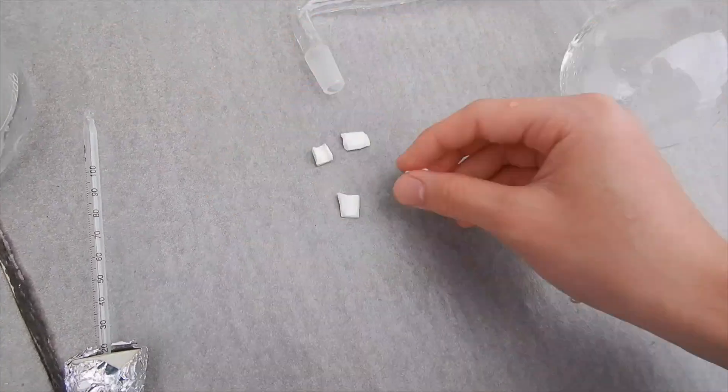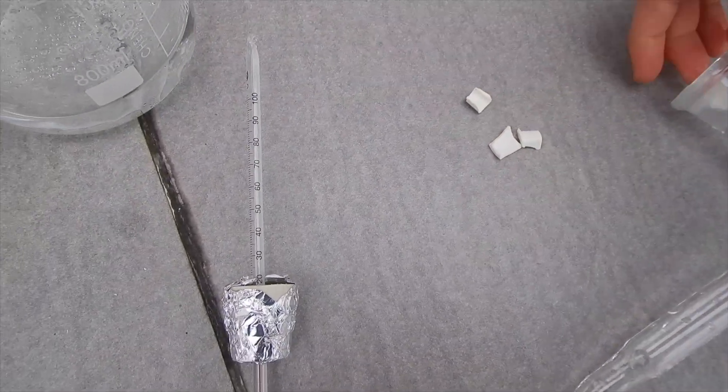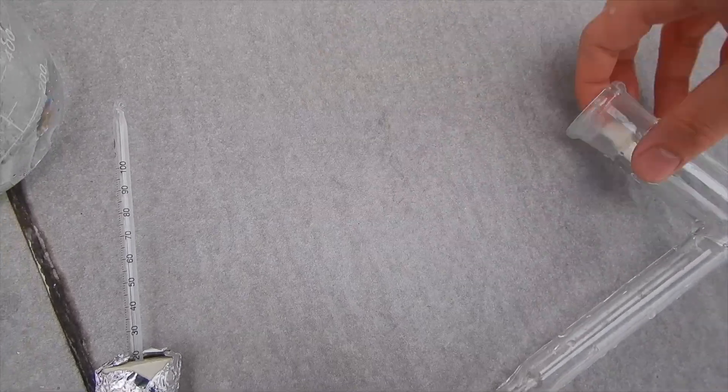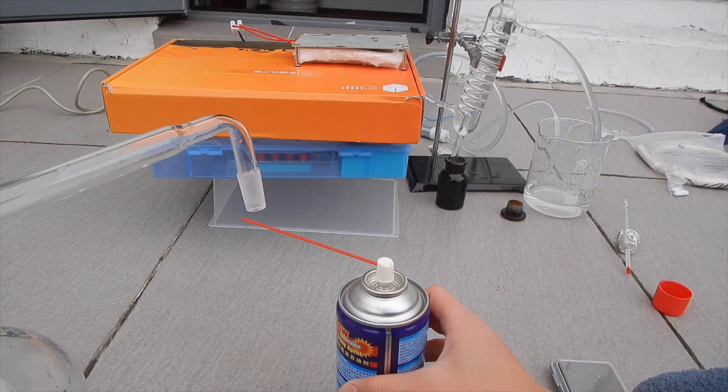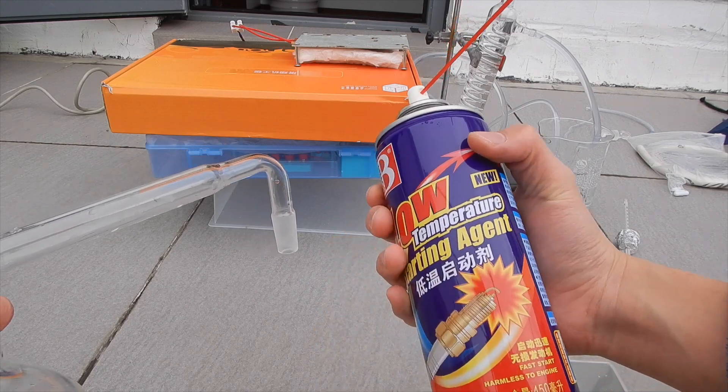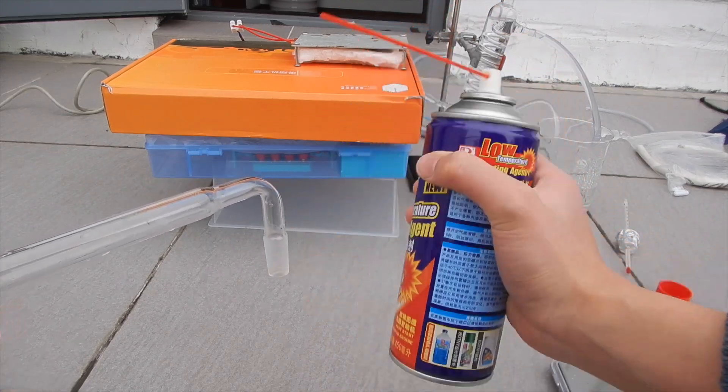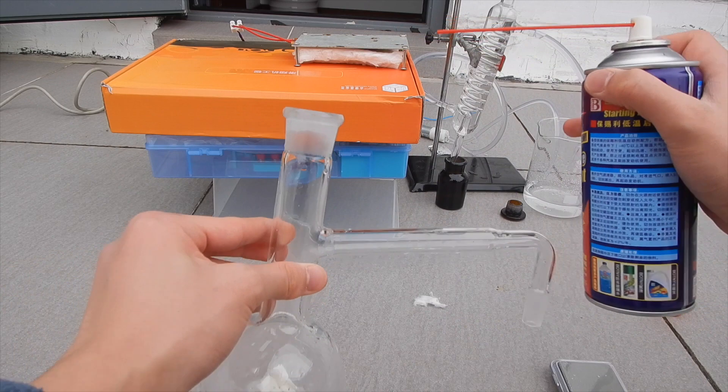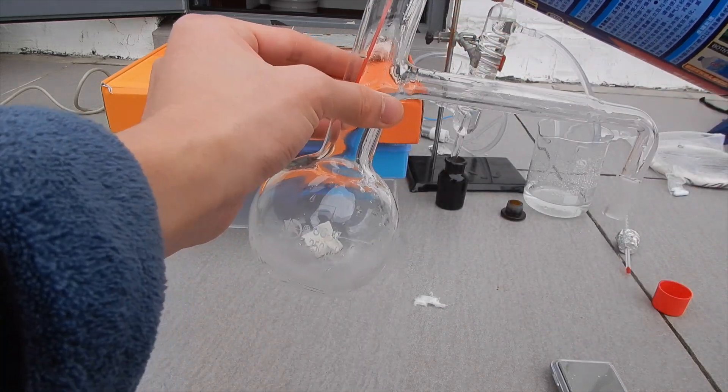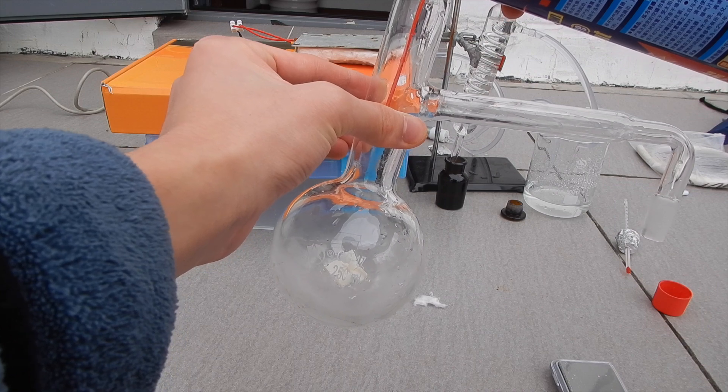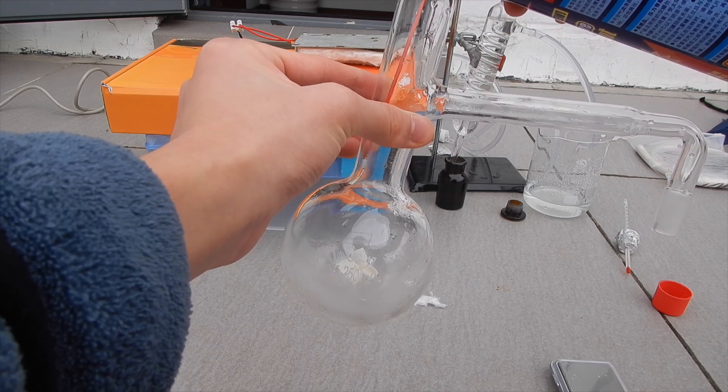I swapped the stirrer for some ceramic pieces, which will act as boiling stones and help control the boiling of the solution. Now I'm ready to do the actual experiment. I grabbed my bottle of car starter fluid and shook it around a bit. This is necessary to equalize the pressure inside the container.